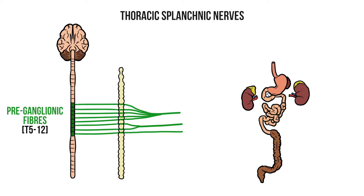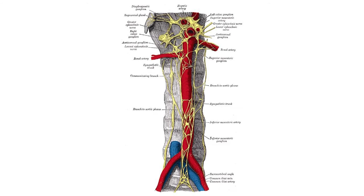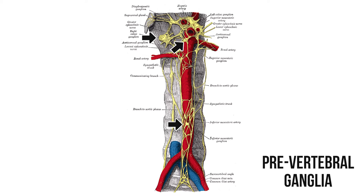Now the preganglionic fibres need to synapse at some point before they reach the abdominal organs. But how can they do that if they've already left the sympathetic chain? Well, these fibres synapse at collateral ganglia that are out in the body and near to the target organs. These are known as the pre-vertebral ganglia, because they're found just in front of the vertebra.